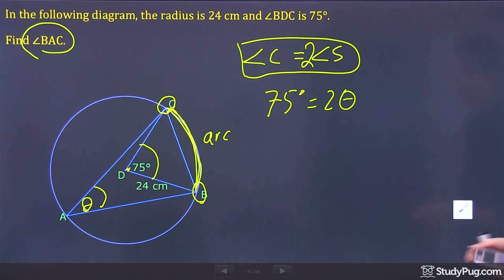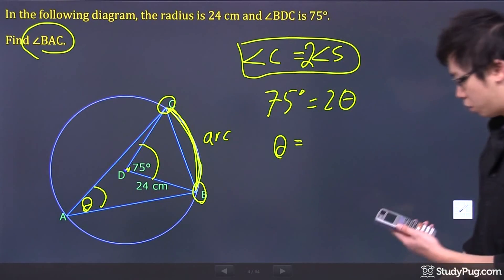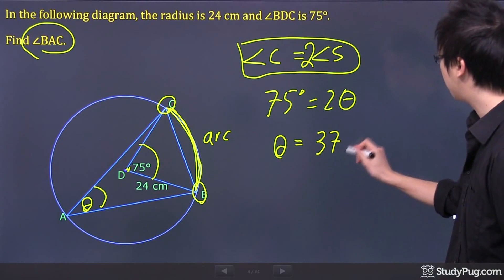You just grab your calculator and take the 75, divide by two, you get yourself the angle, which is this one right here, the BAC, would just be 37.5 degrees.